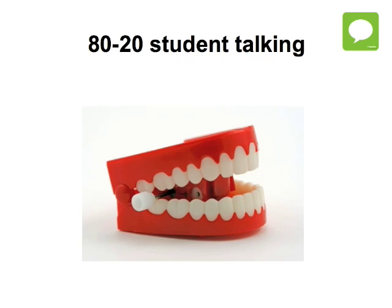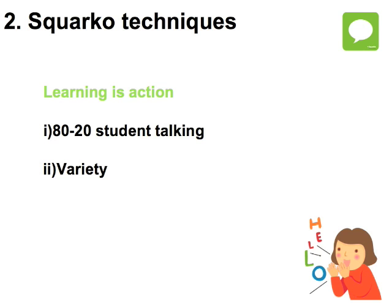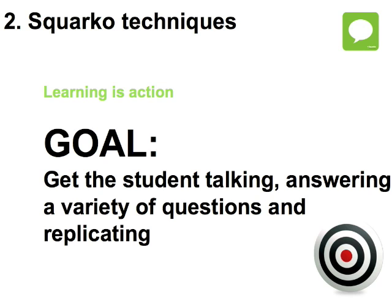Once you think a student has become used to an action, it is time to vary the action to keep the student learning. If you do not think they have understood it, then ask them to replicate this action — i.e., for them to say it. Try and get your student to do as much as possible. Make sure they are talking and answering a variety of different types of questions and paraphrasing as much as possible.